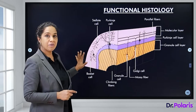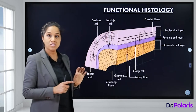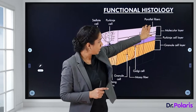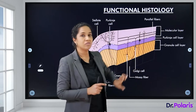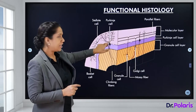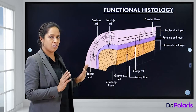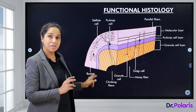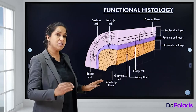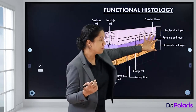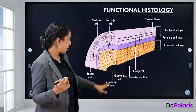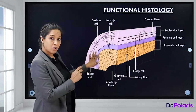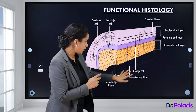Looking at the functional histology of the cerebellum, the outer cortex has three layers: the outermost molecular layer, then the Purkinje cell layer in the middle, and the innermost granular cell layer. The molecular layer contains basket cells and stellate cells. The Purkinje cell layer contains Purkinje cells. The granular cell layer contains climbing fibers and mossy fibers.